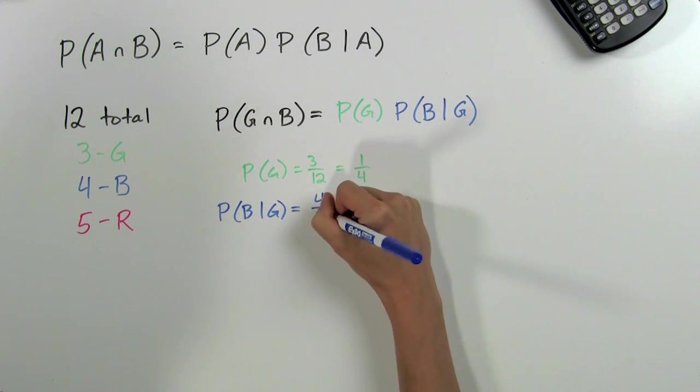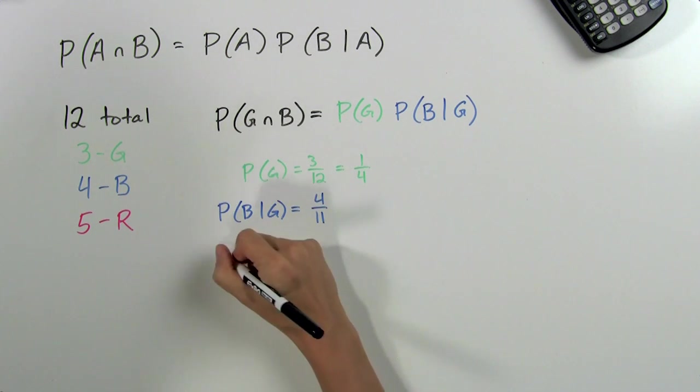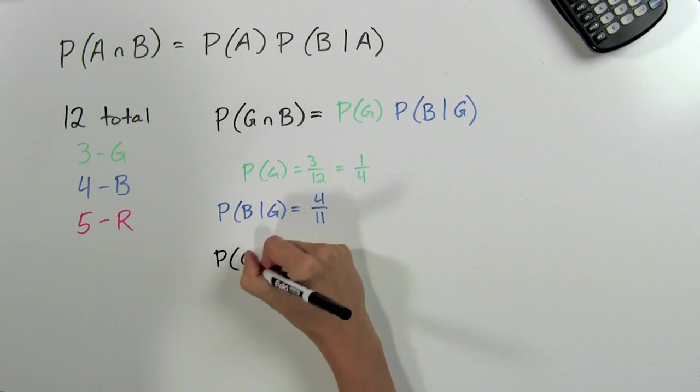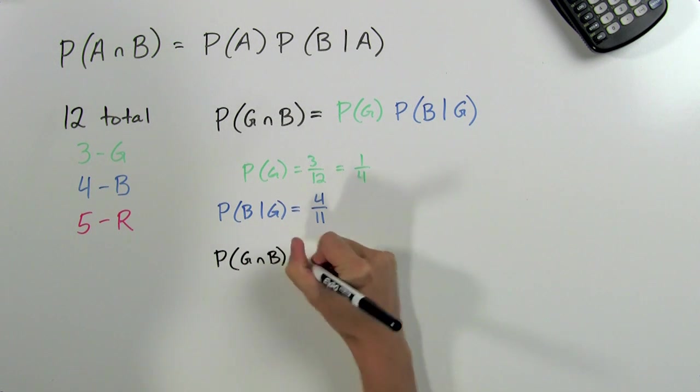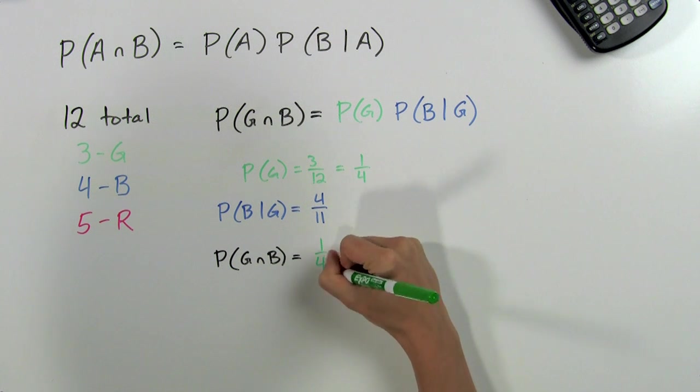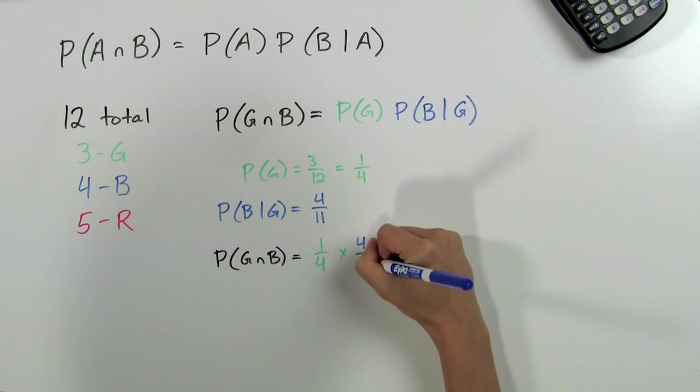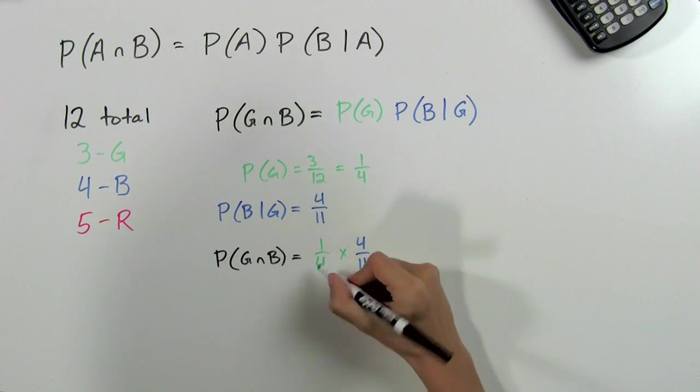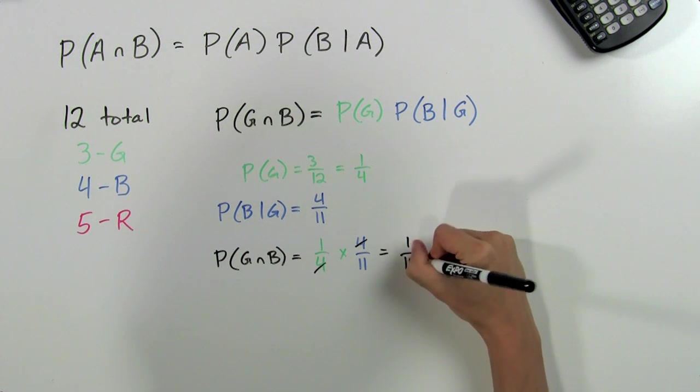So we have four elevenths here. Now to get our answer, we can go ahead and multiply our two probabilities. We have one-fourth times four elevenths. The fours cancel out and we're left with one eleventh.